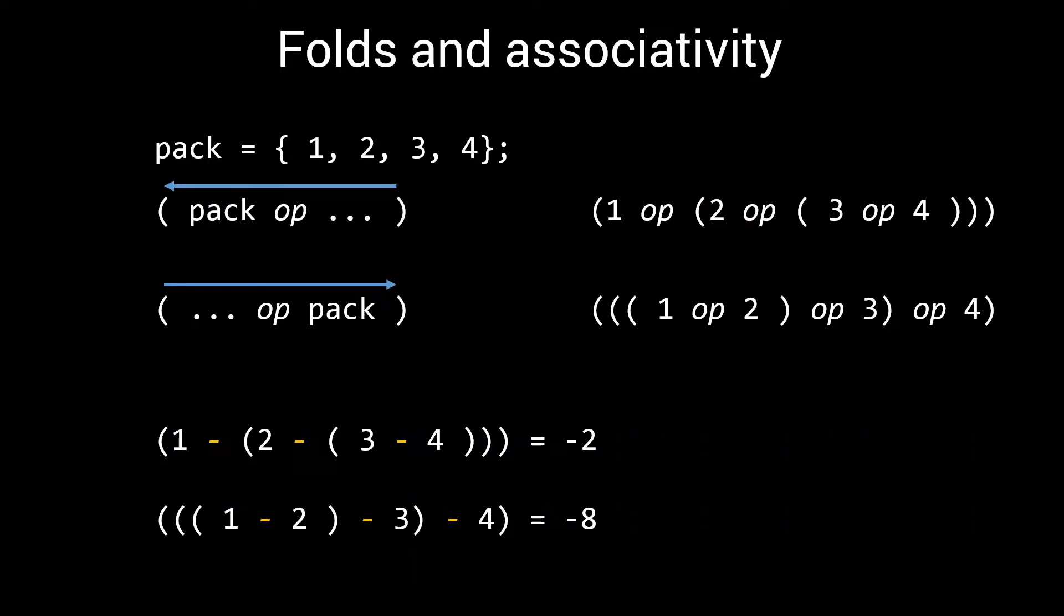Parameter pack on the left means right associative fold. Pack on the right means left associative fold. I like to think of it as the operations are performed towards the side of the parameter pack.